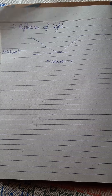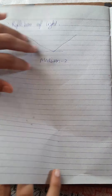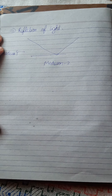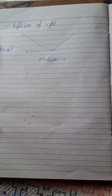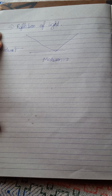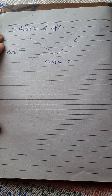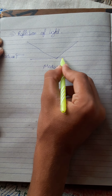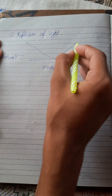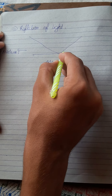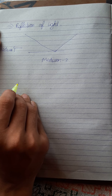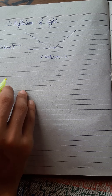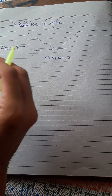We learned in rectilinear propagation that light always moves in a straight line. Then why does light bend here? The rectilinear propagation says light would not bend until something interferes with it. Here, the material is interfering, so it is not moving in a straight line. Now let's learn about some terms related to reflection of light.